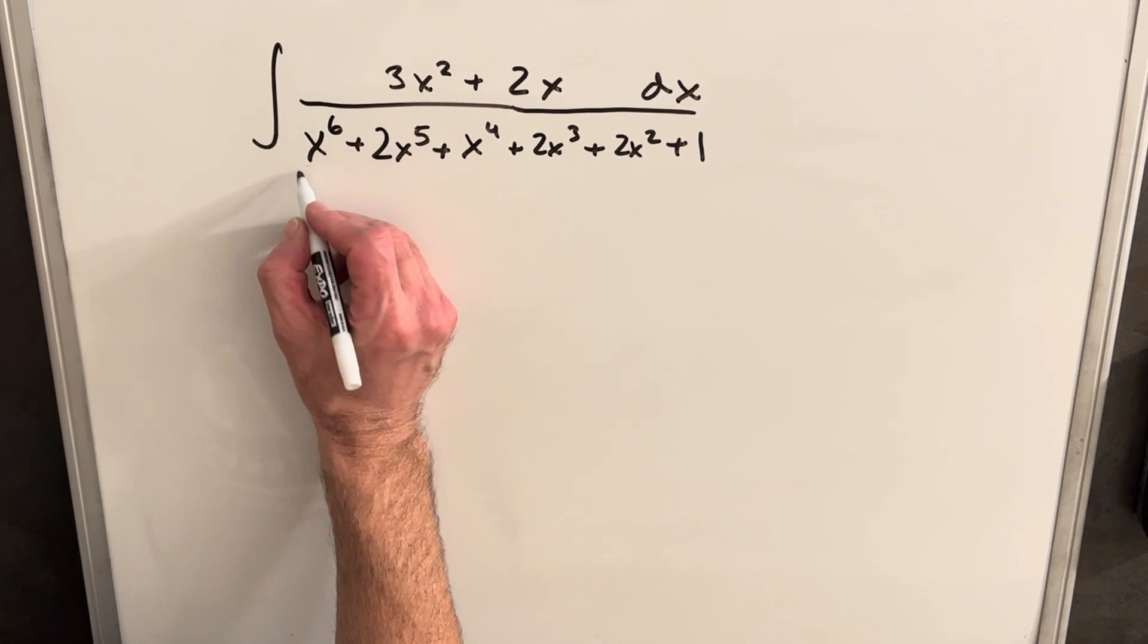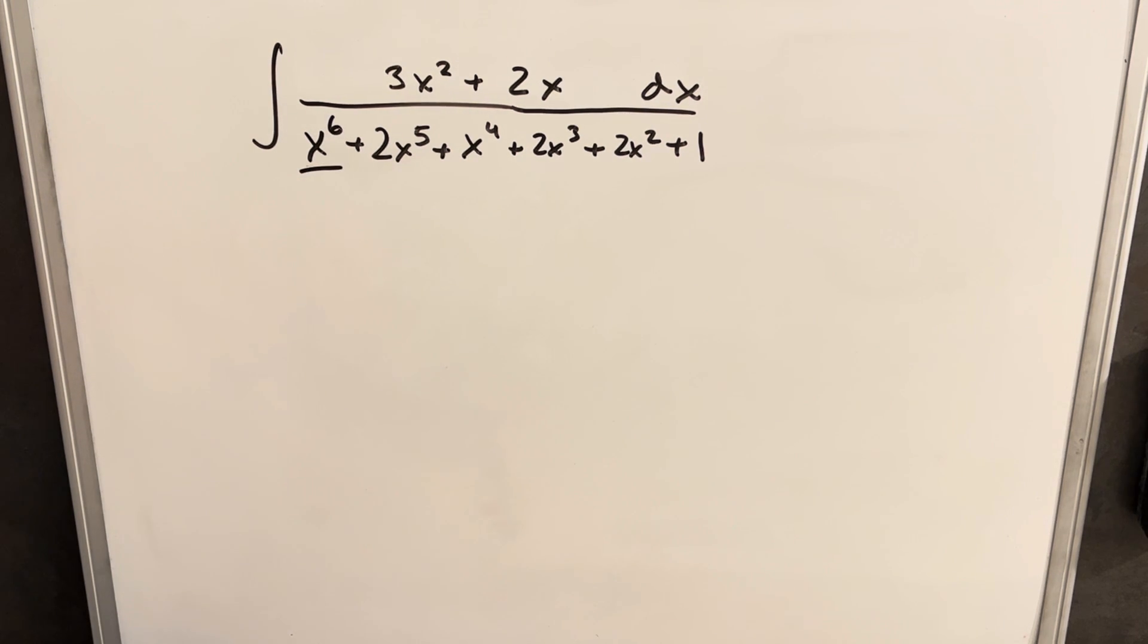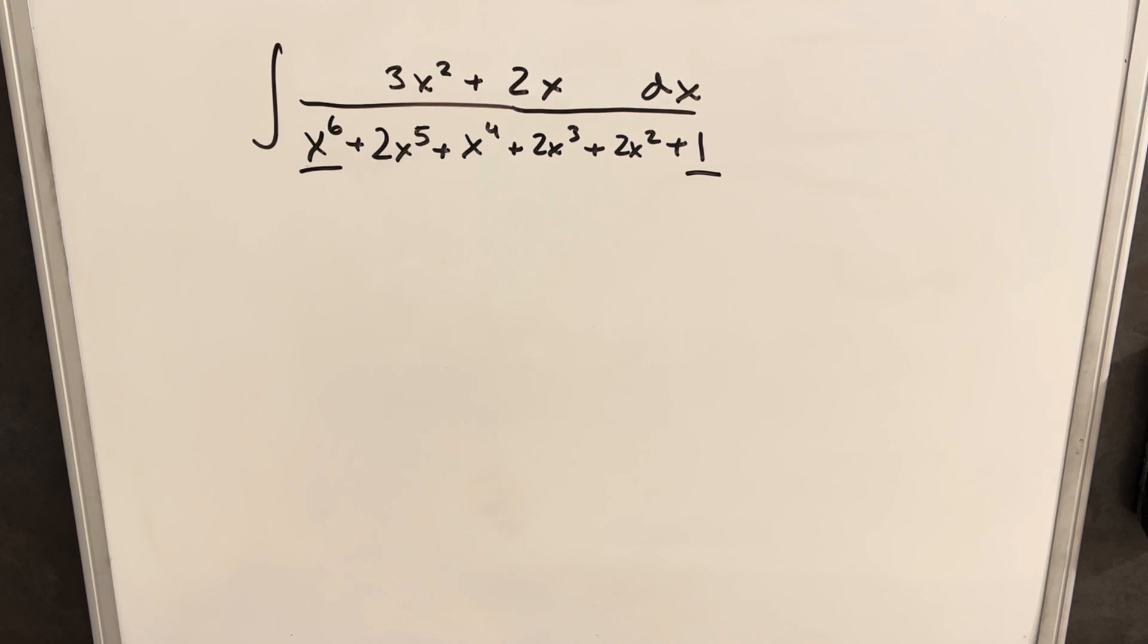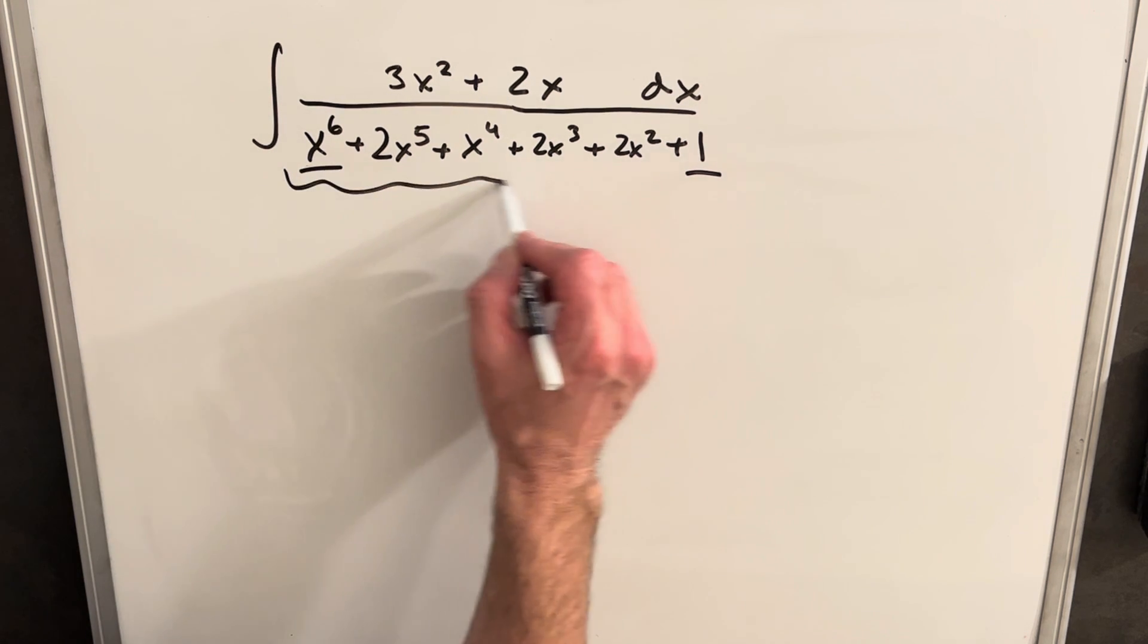I didn't want to try to factor that, but then we noticed that our first term is actually a square. X to the 6 can be written as x cubed squared. This term is a perfect square, and then we have a symmetry. We have all the exponents are 2 or 1, so I think that we do want to try to factor this thing.